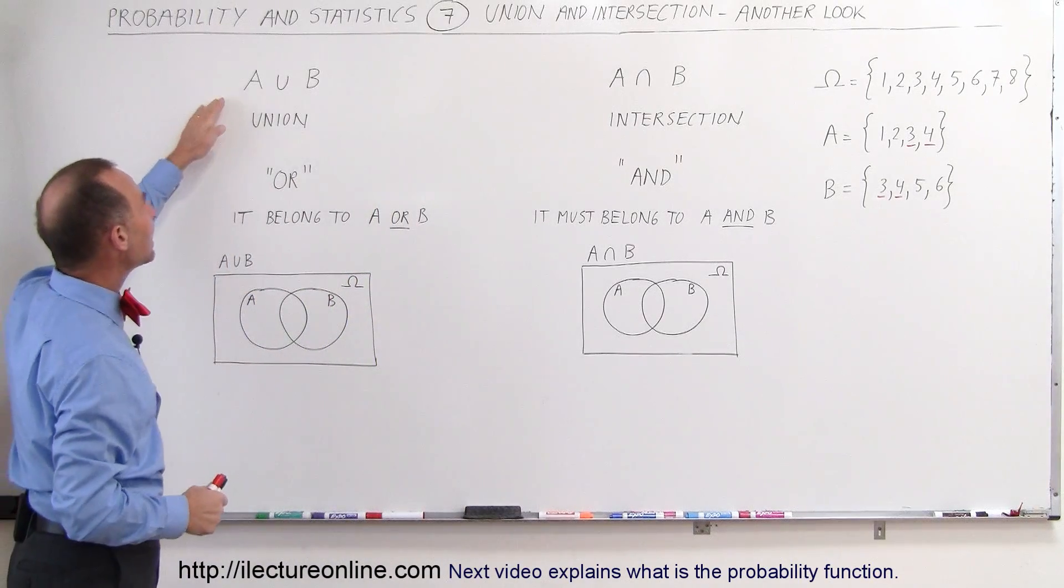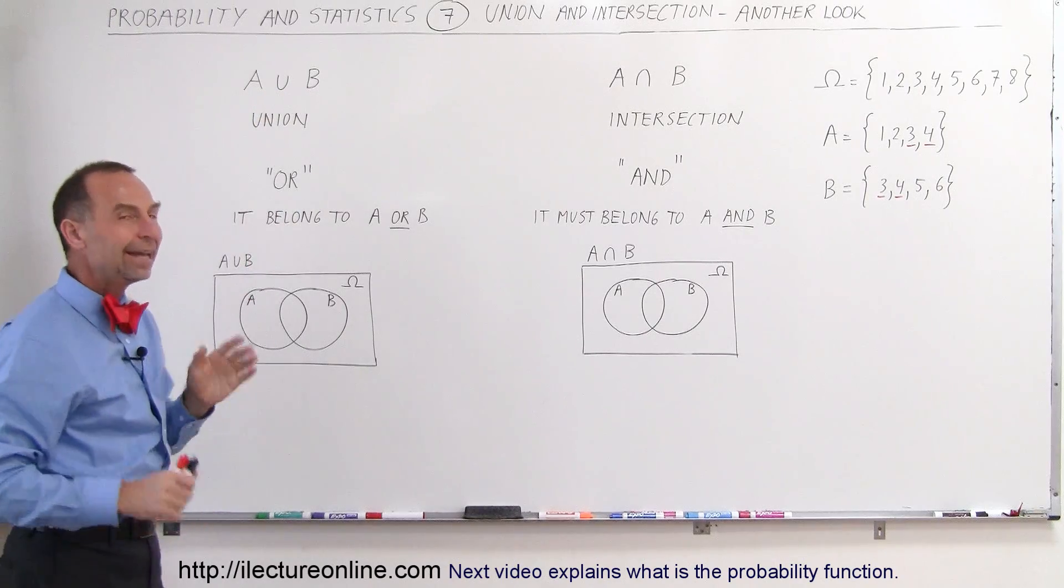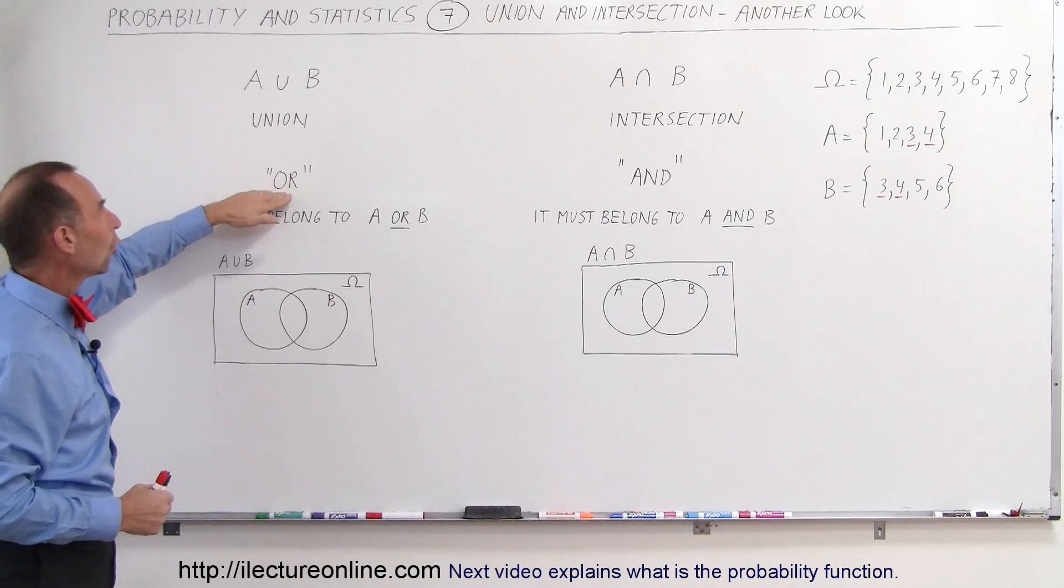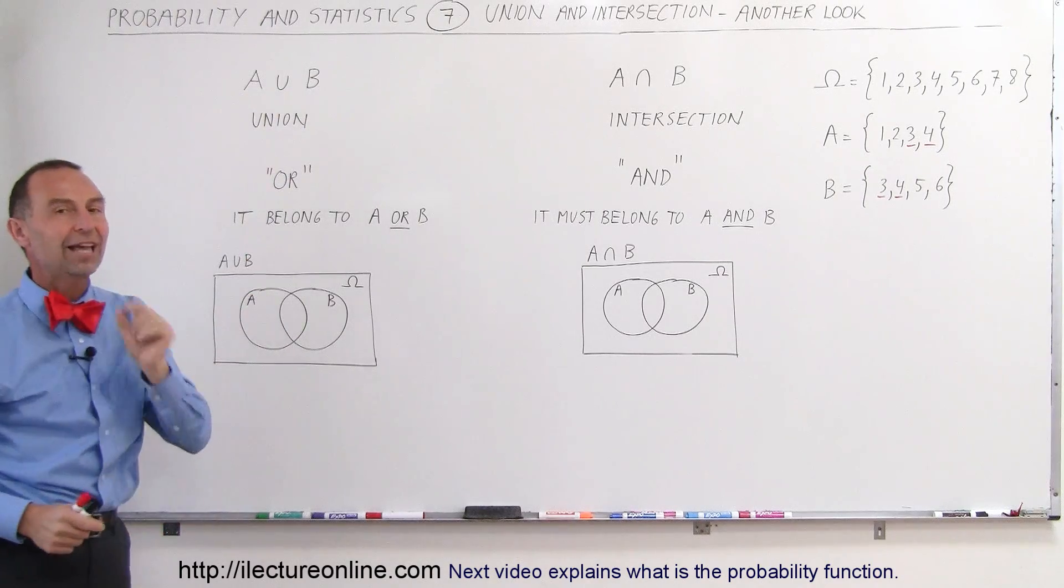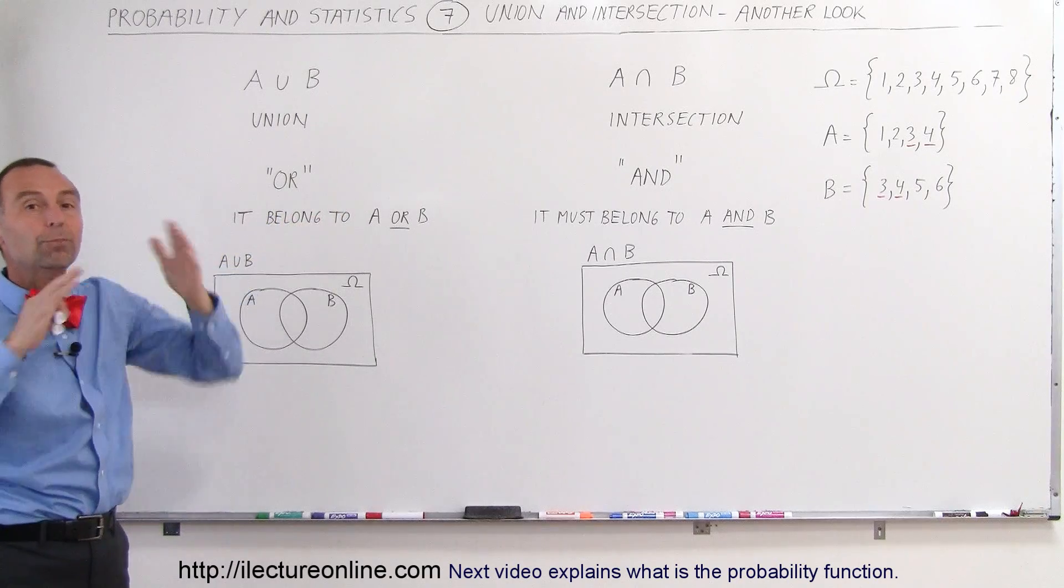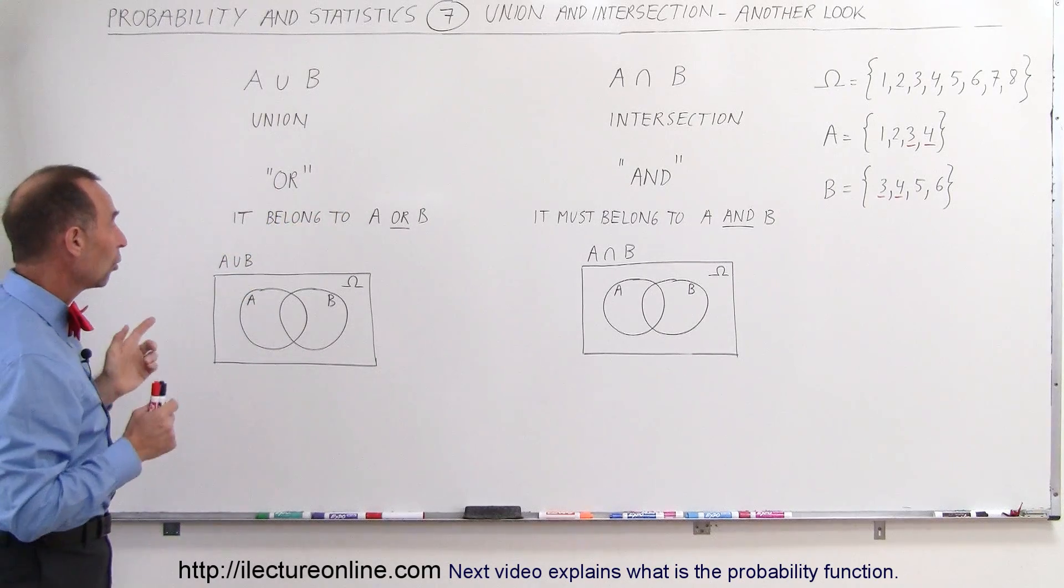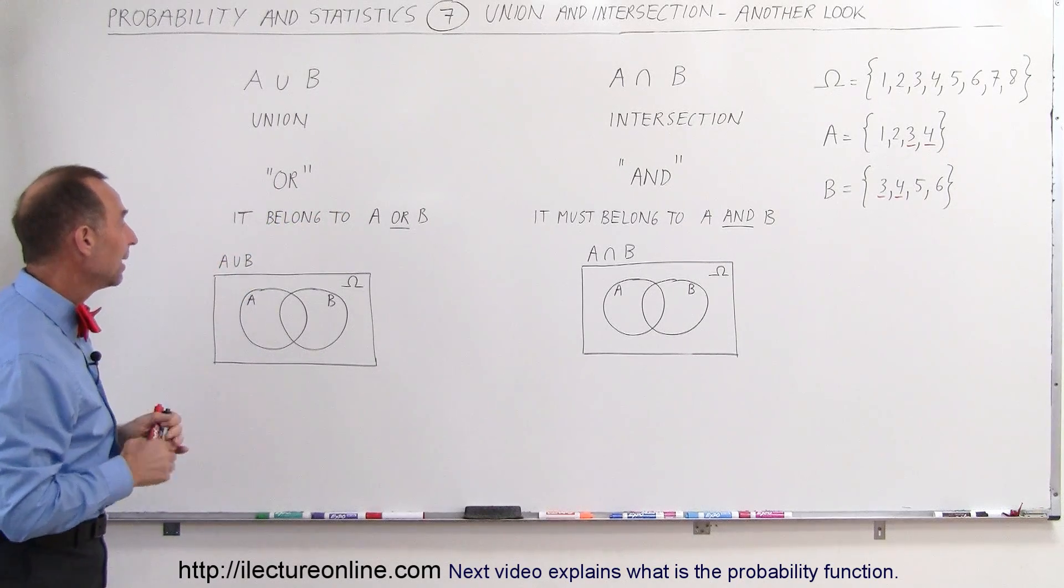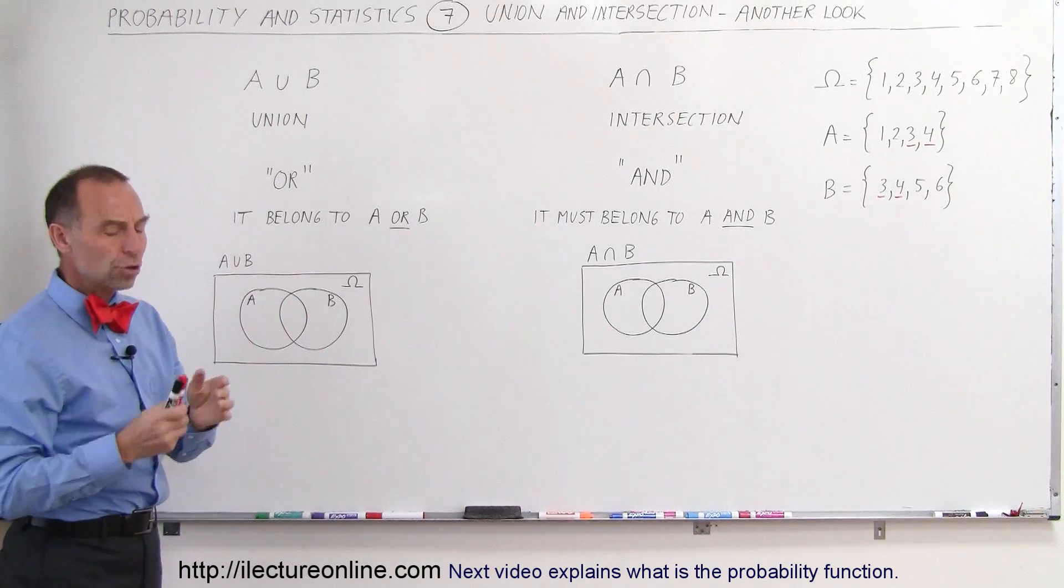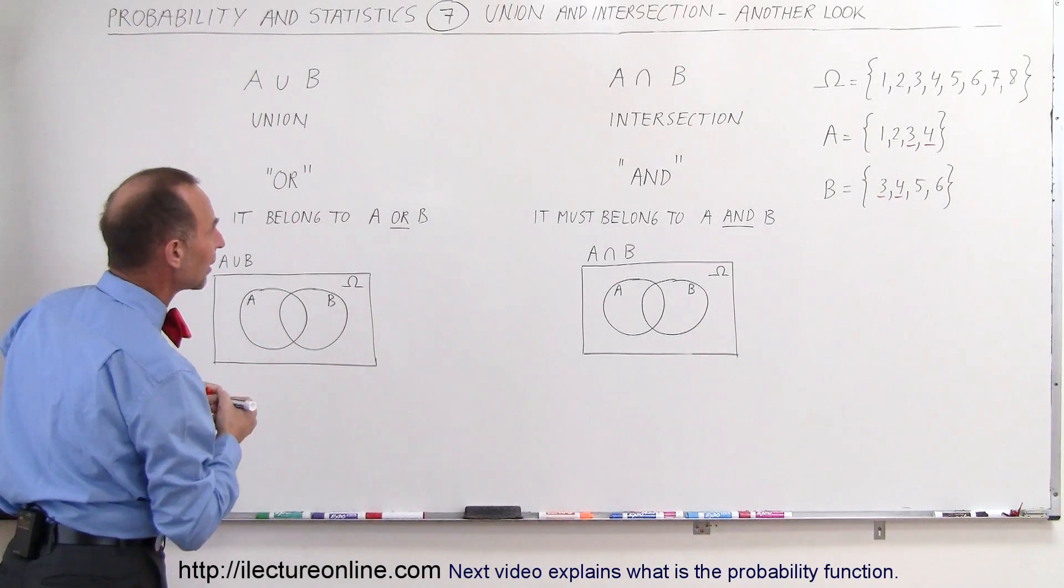So what do we mean by A union B? It helps sometimes to substitute the word union for the word or, A or B. If the element belongs in A, or it belongs in B, it's part of the union. So when you write A union B, all the elements that belong in A, or they belong in B, they become part of the union. Now let's write some of the numbers down in here.